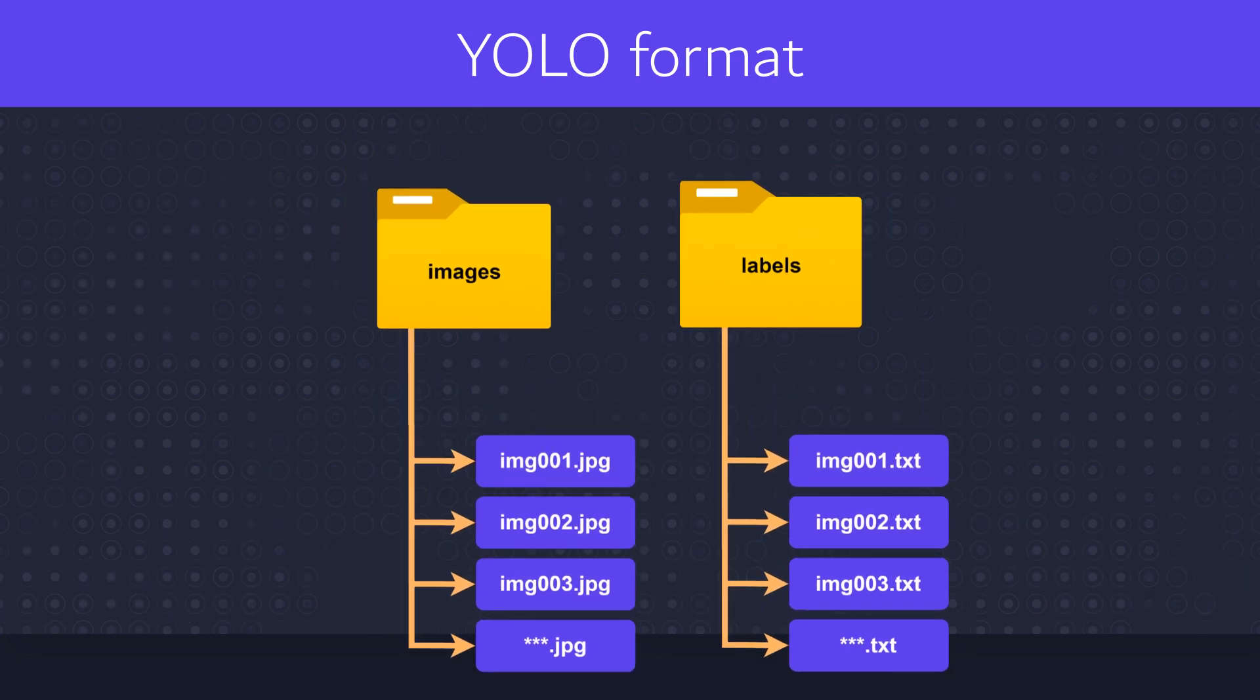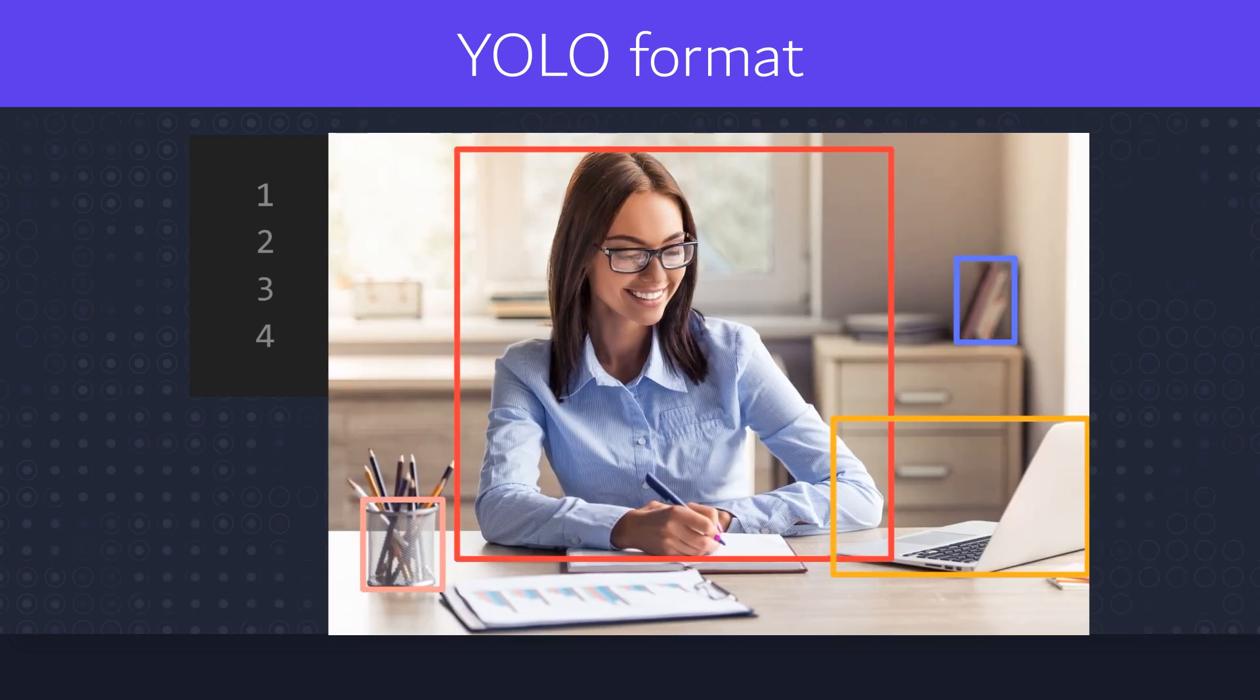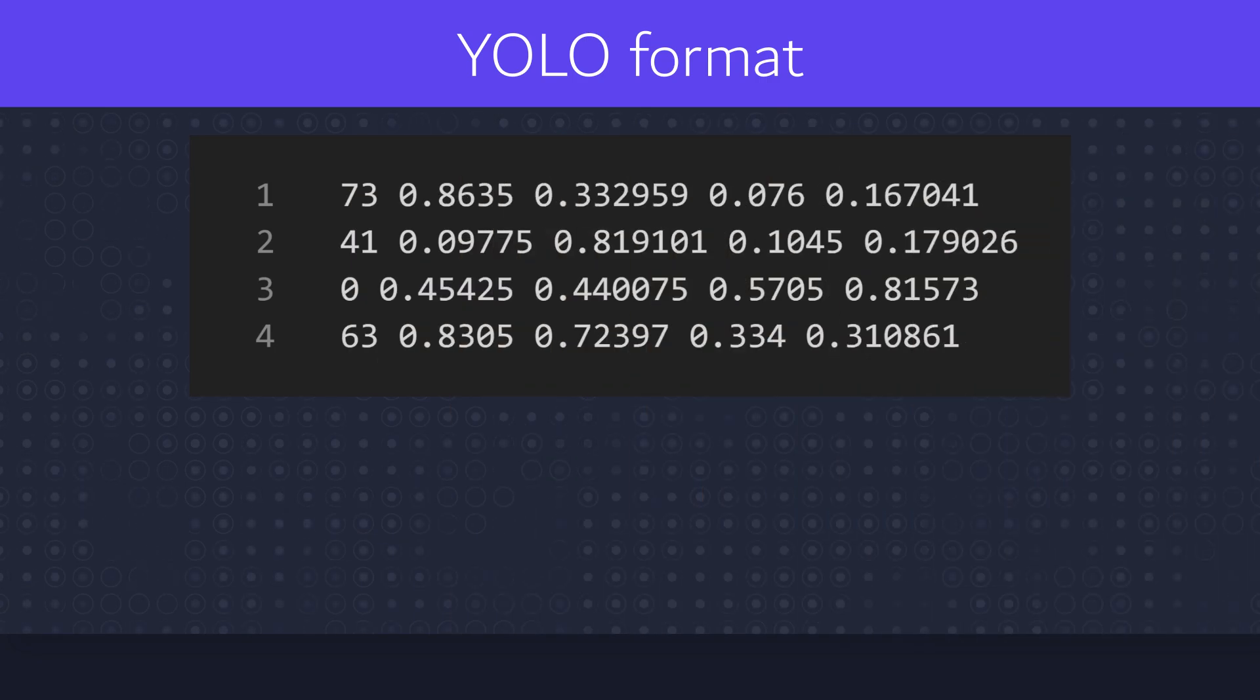Let's open annotation txt file. YOLO format looks like following. Every line describes one separate object on image. We have here four objects and therefore the same number of lines in the annotation txt file. The numbers in every line describe following.